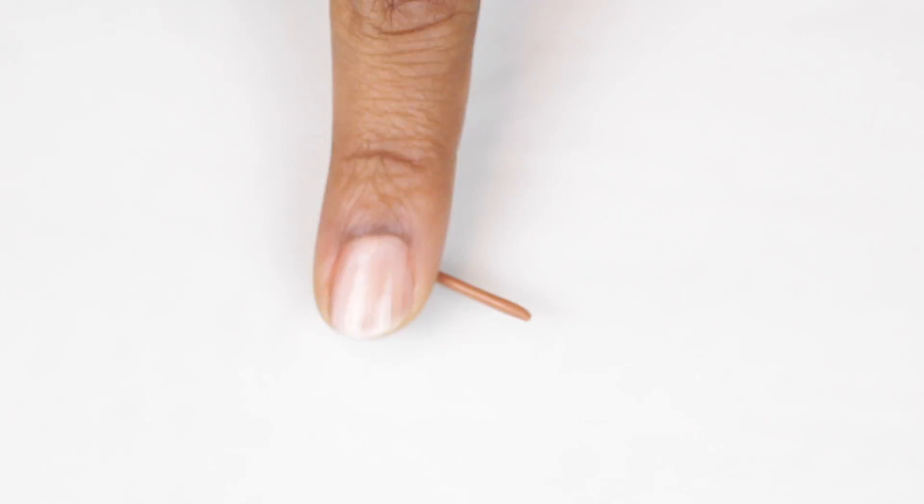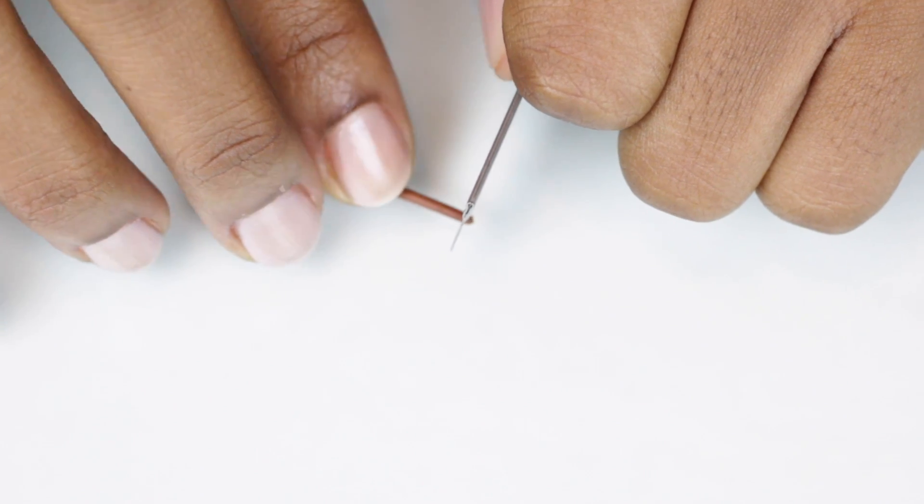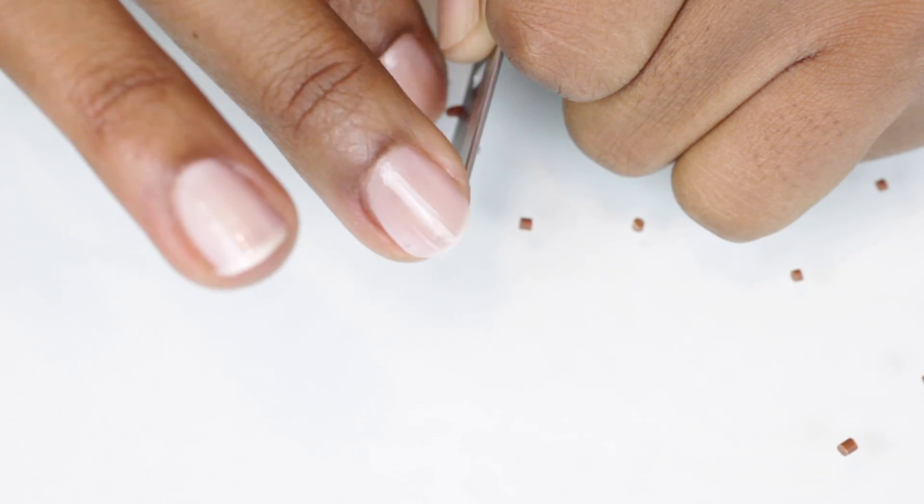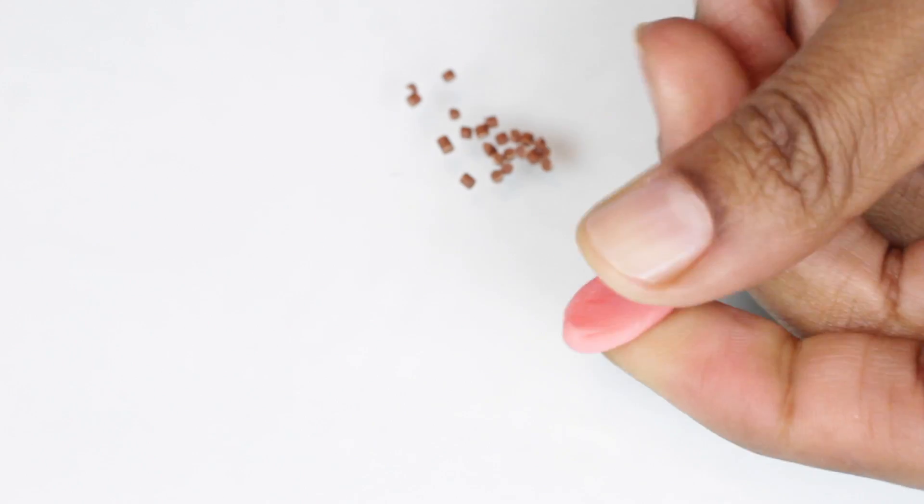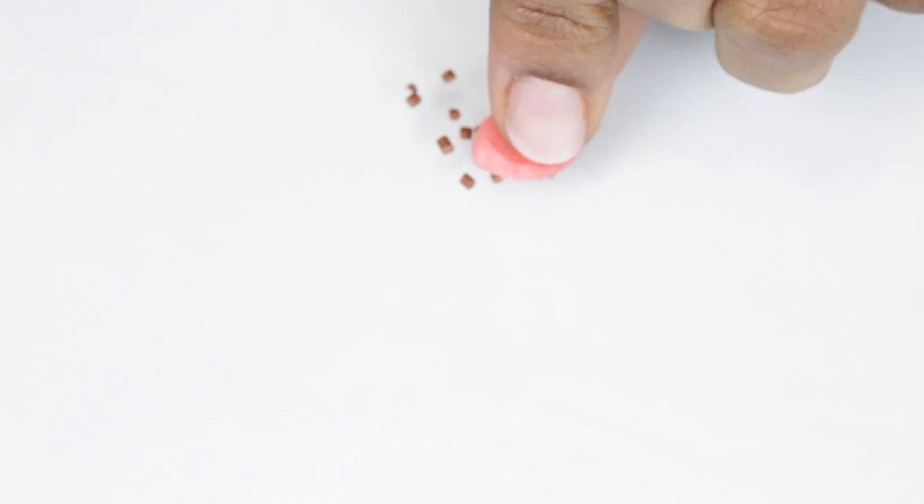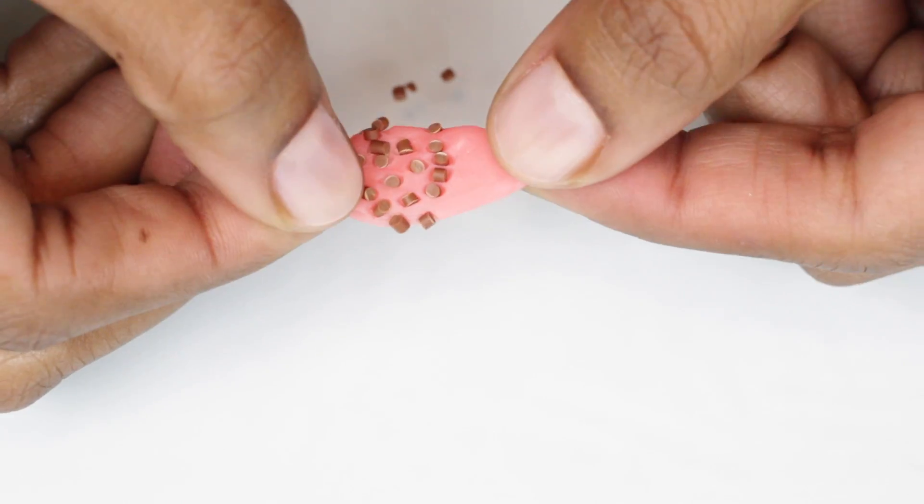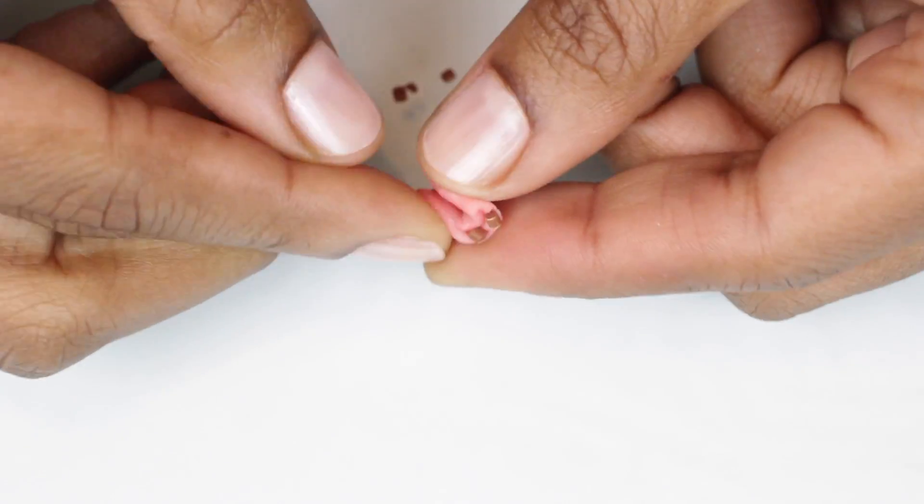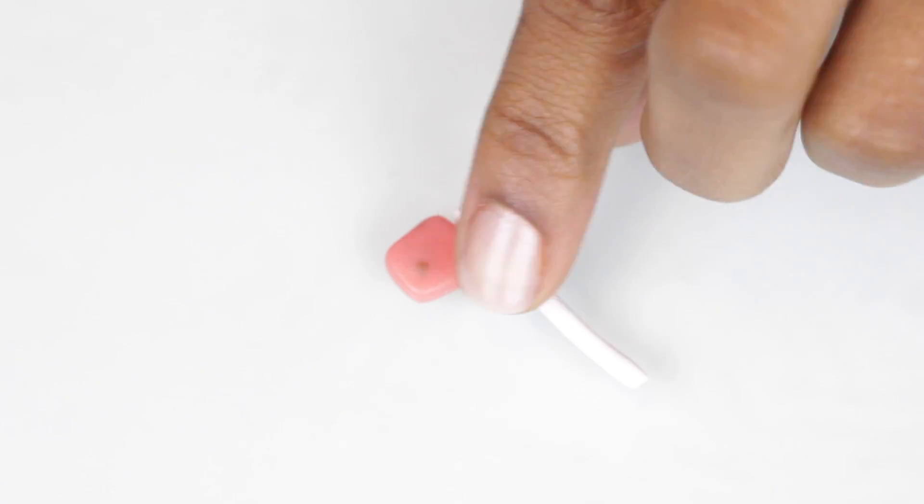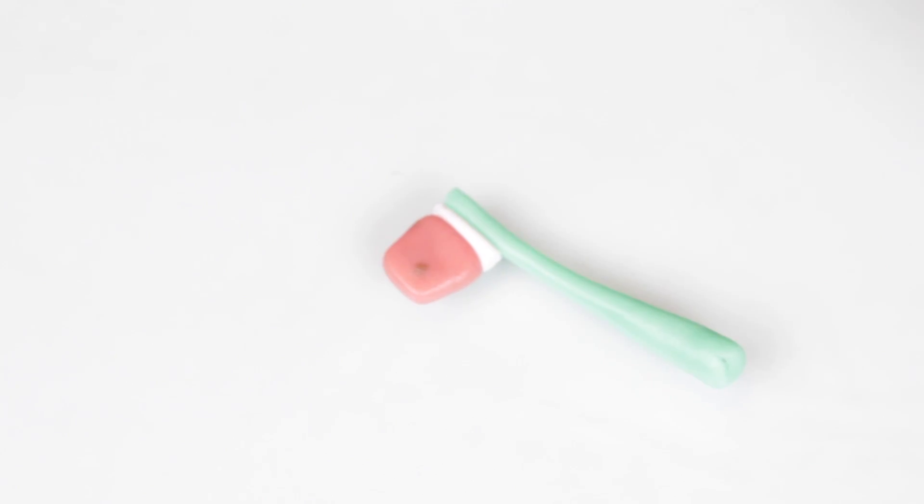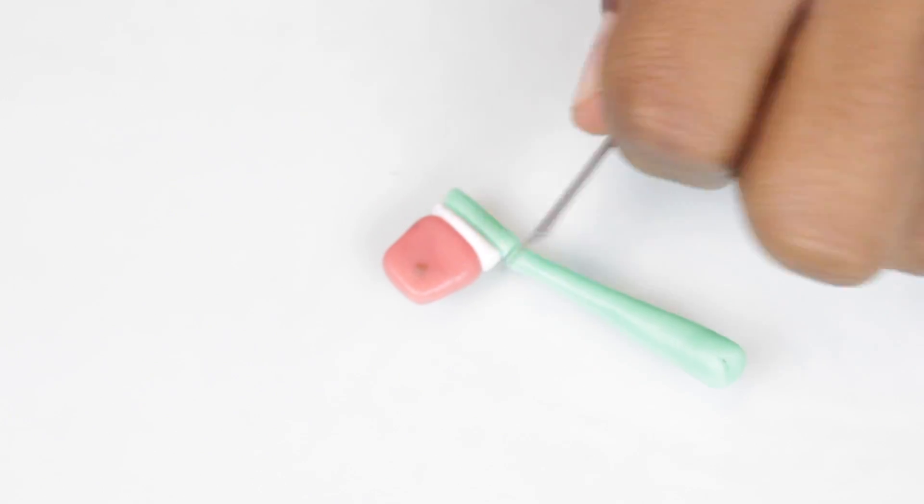To make the watermelon popsicle, I just pre-baked a little piece of brown clay and then chopped it up into these little pieces to look like chocolate chips and then I mixed it in with some reddish translucent clay just like this. Then I added some white clay and of course some green and now I'm just going to press it into the mold.